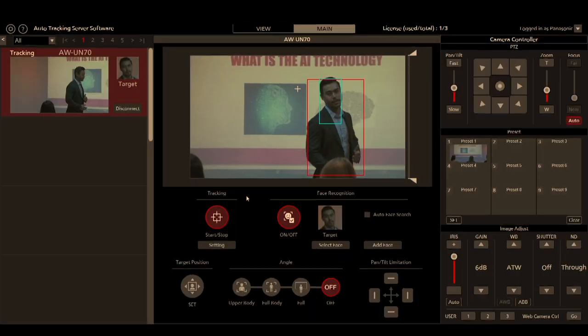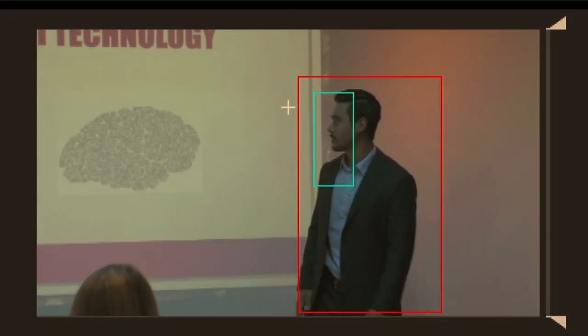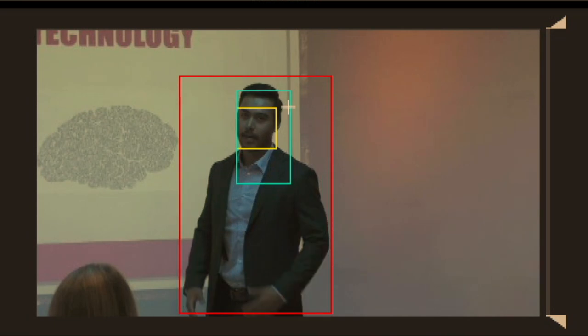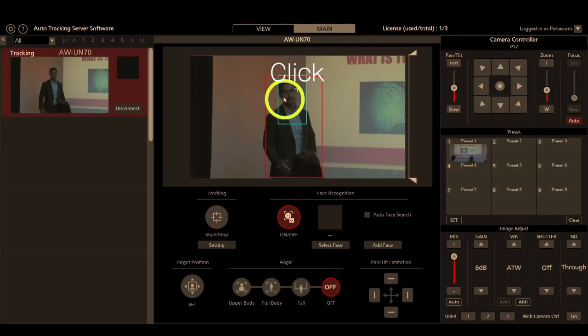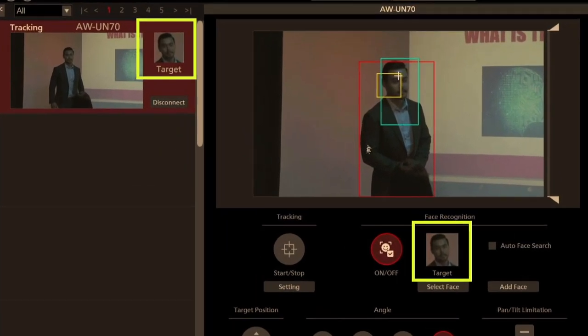The software is easy to use. When you enable facial recognition, people are automatically detected and indicated by square frames. When you double-click a face in a frame, it is registered as a target face.